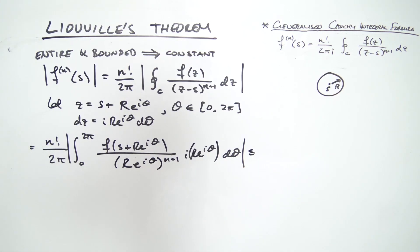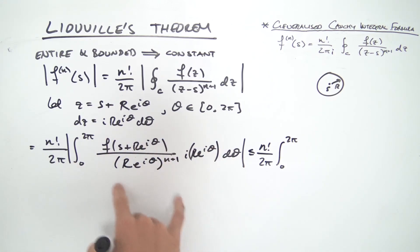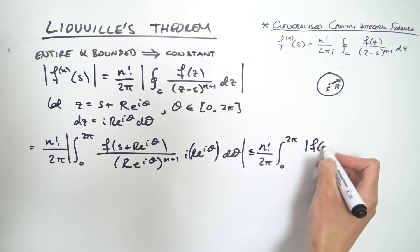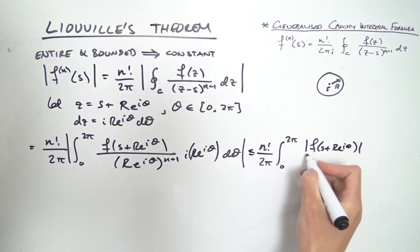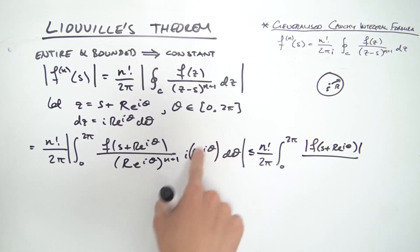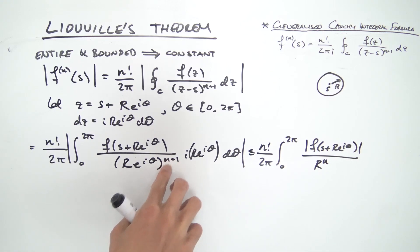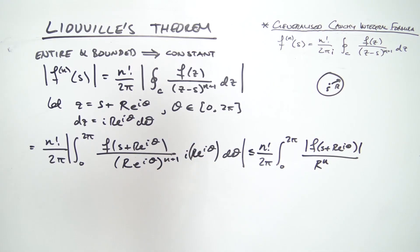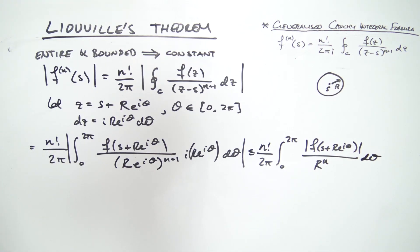Distributing the absolute values, this is less than or equal to n factorial over 2π times the integral from 0 to 2π of |f(s + r·e^(iθ))| divided by r^n. The extra r in the numerator and denominator cancel appropriately, |e^(iθ)| = 1, so we're left with |f(s + r·e^(iθ))| / r^n dθ.